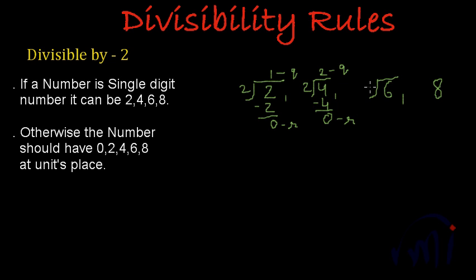And similarly, if I divide 6 by 2, 2 3s are 6, and again we get remainder as 0. So these numbers are divisible by 2. These were the single digit numbers and we have seen that they are divisible by 2. When we divide them by 2, we are getting remainder as 0.